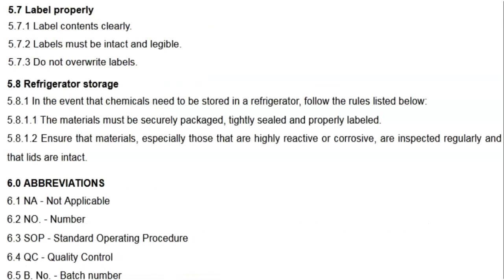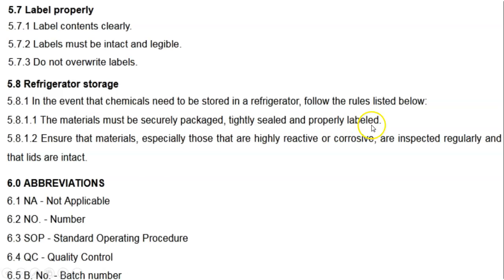Regarding labels on chemicals: labels of contents should be clearly mentioned and written. Labels must be intact and legible, and do not overwrite labels. For refrigerator storage, if chemicals need to be stored in the refrigerator, follow the rules listed on the container. Materials must be secured, packaged, tightly sealed, and properly labeled. Also ensure that materials, especially those that are highly reactive or corrosive, are inspected regularly and that lids are intact.